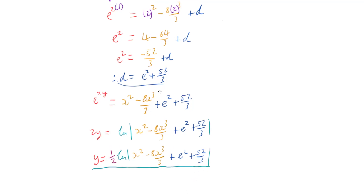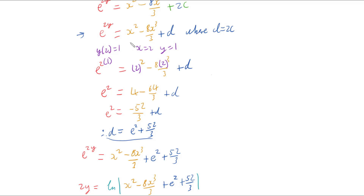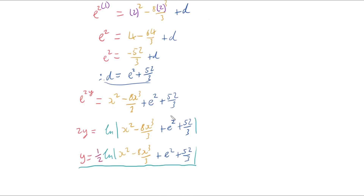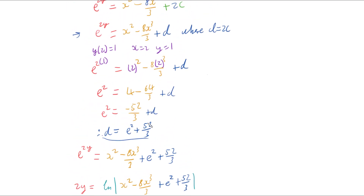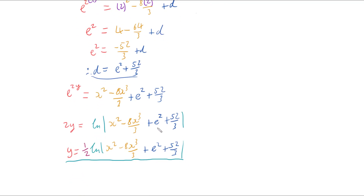I should point out I could have tidied this up more and isolated y before finding my constant, but that would mean d would be trapped inside a log. I would then have had to undo that log by raising to the power of e, ending up back where I started anyway. So I saved time by substituting in at the earlier, simpler stage.